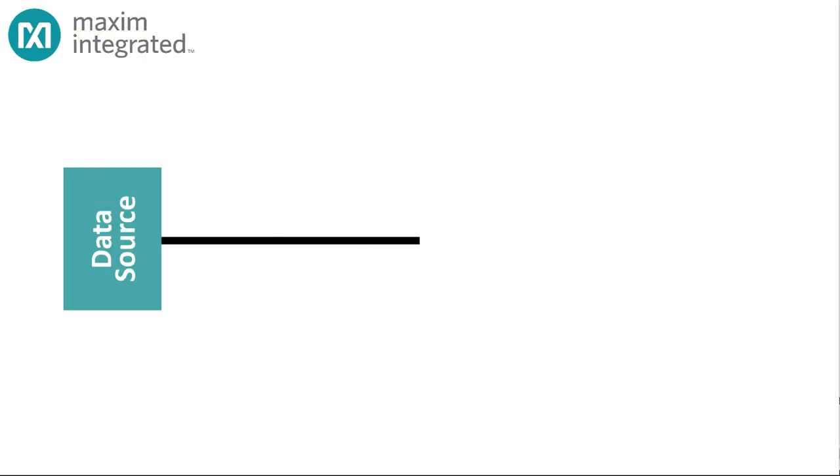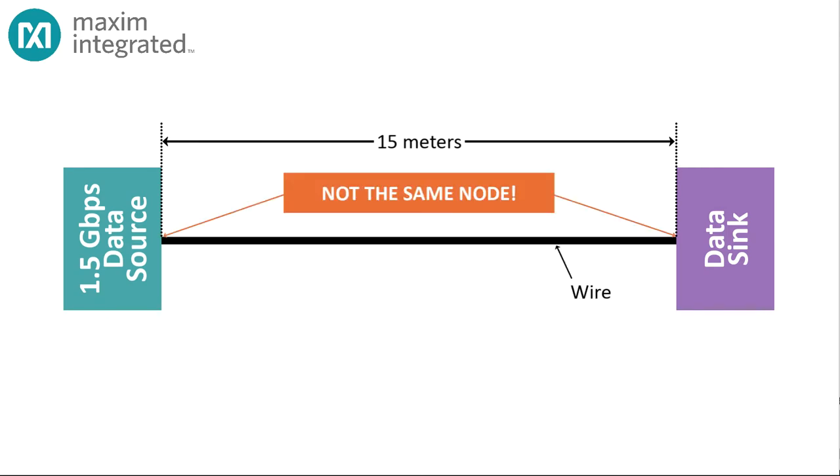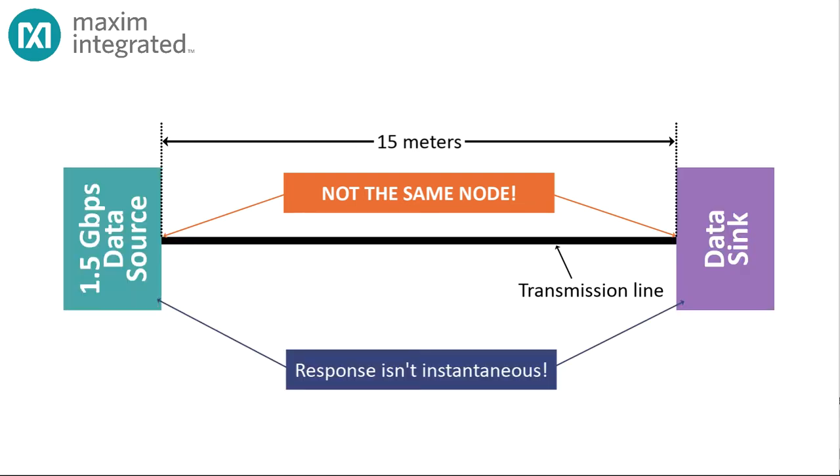So, what about wires that are, let's say, several meters long and frequencies north of one gigahertz? Well then, the output of the transmitter and the input of the receiver, even if they are connected by a piece of wire, are most certainly not the same node, and the wire is no longer just a wire, it's a transmission line. And signals applied to the transmission line aren't just applied, they're launched.